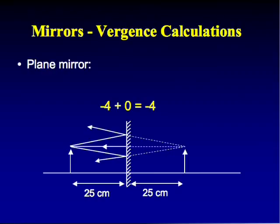Vergence calculation for a plane mirror: object 25 cm away, vergence = 1/0.25 = minus 4 diopters. u plus d equals v: minus 4 plus 0 = minus 4. The light reverses direction with vergence minus 4 — still diverging — so we trace imaginary extensions back through the mirror. Reciprocal of 4 = 0.25 m = 25 cm behind the mirror. The image is virtual, upright, and as far behind as the object is in front.